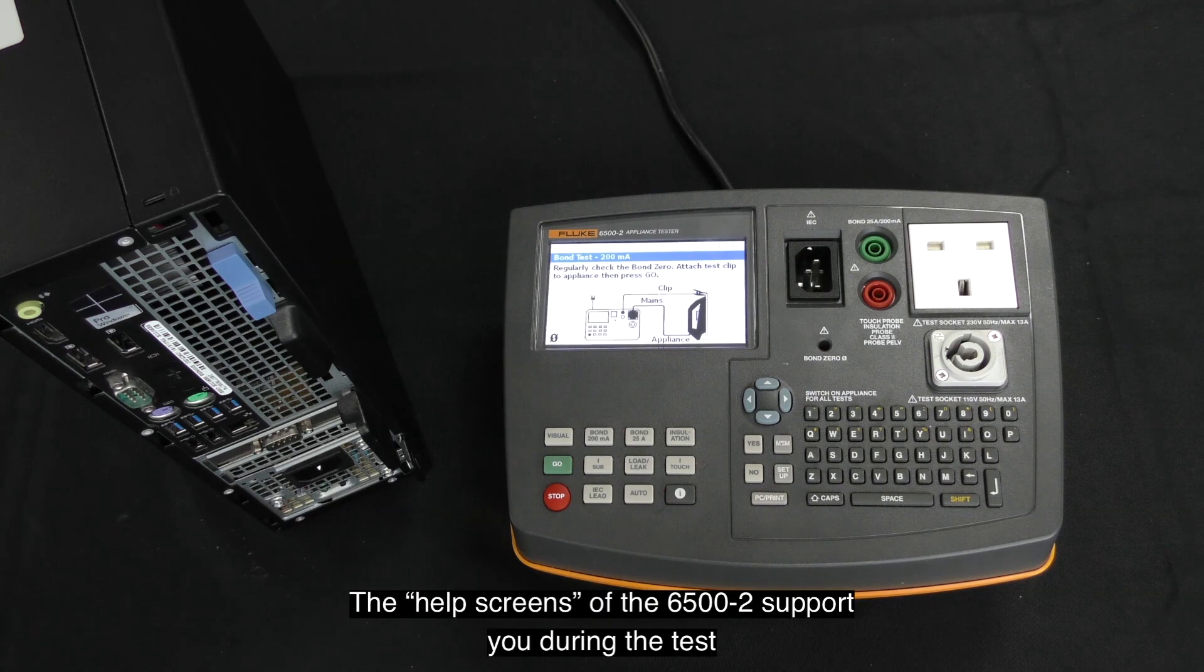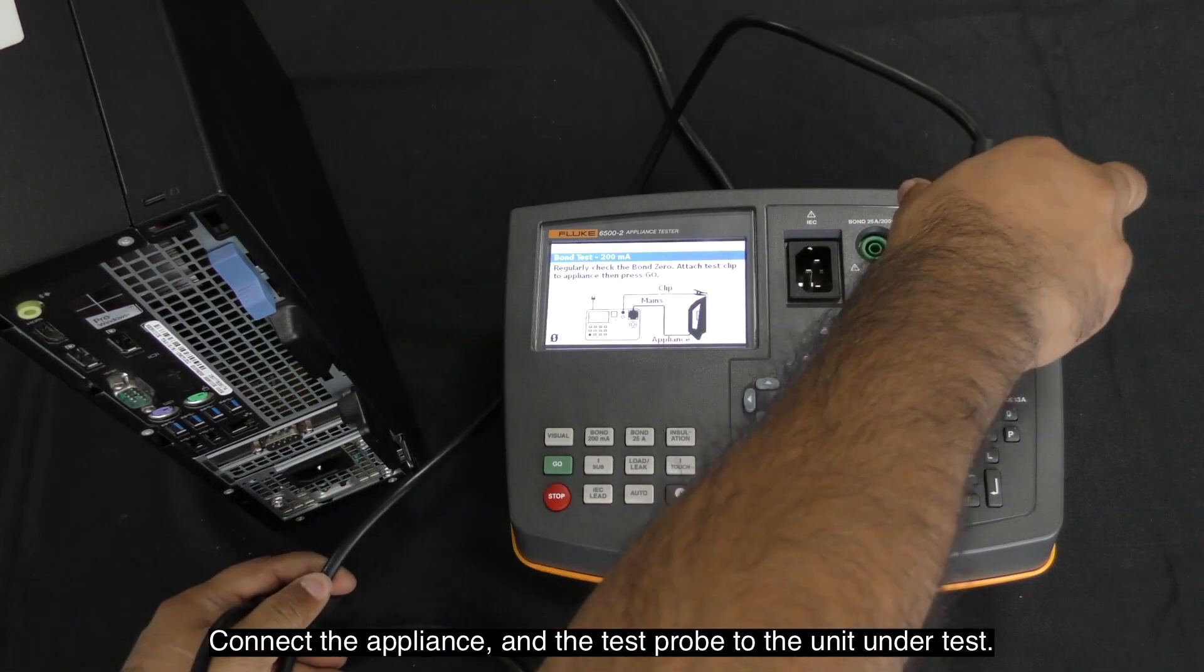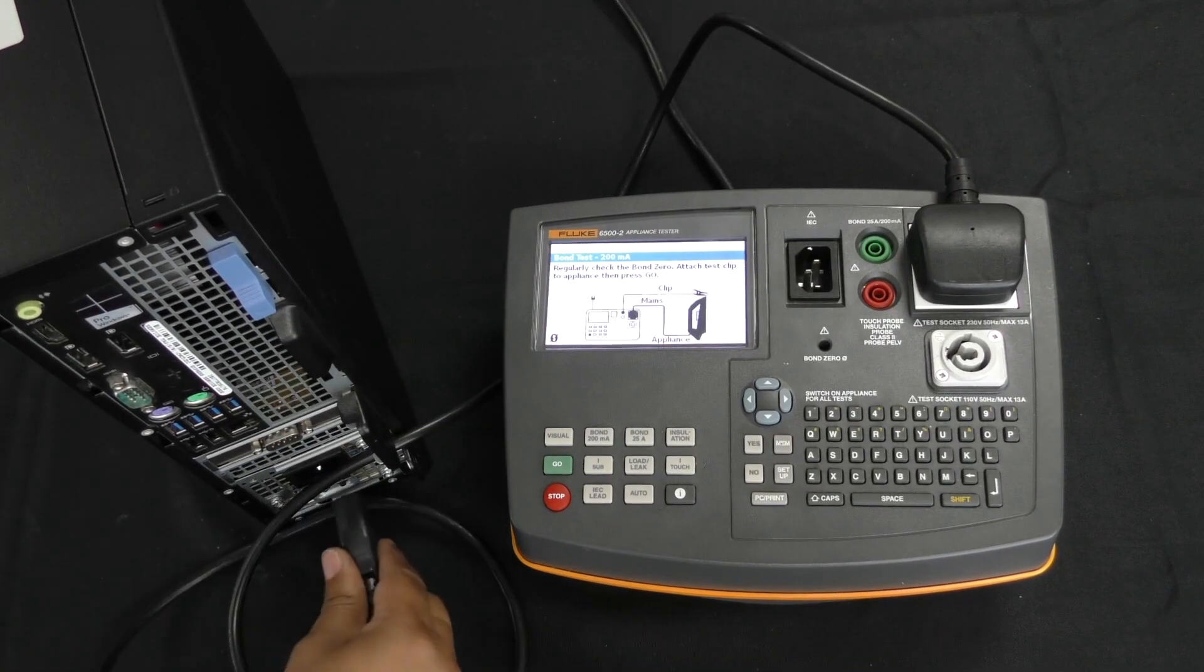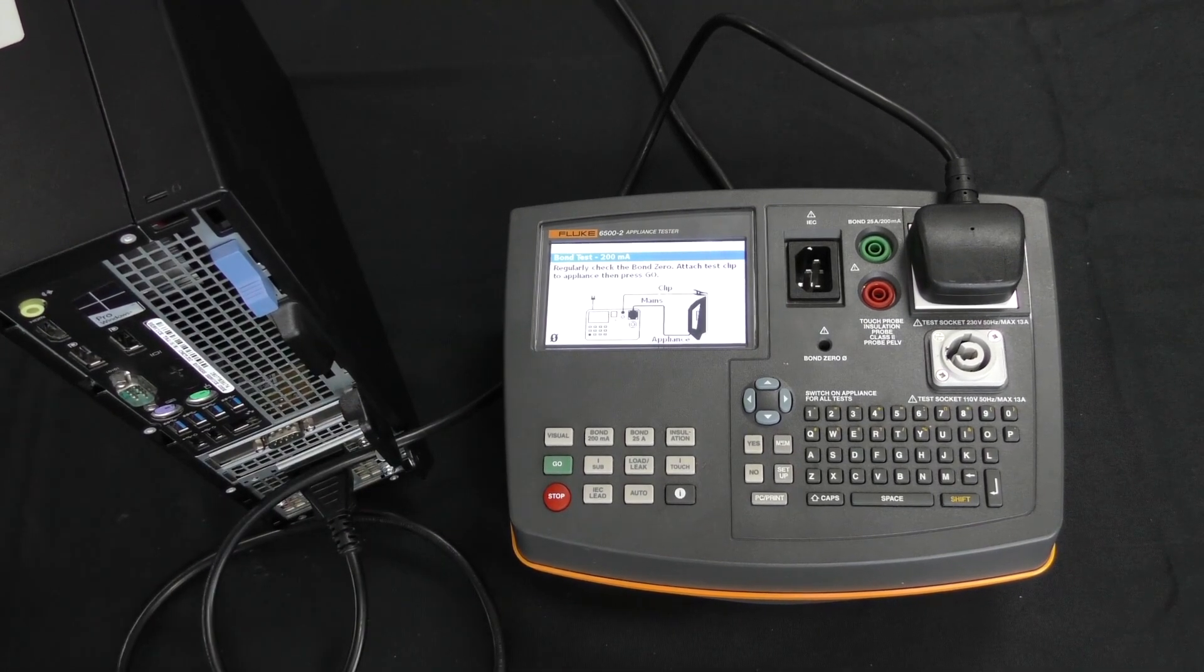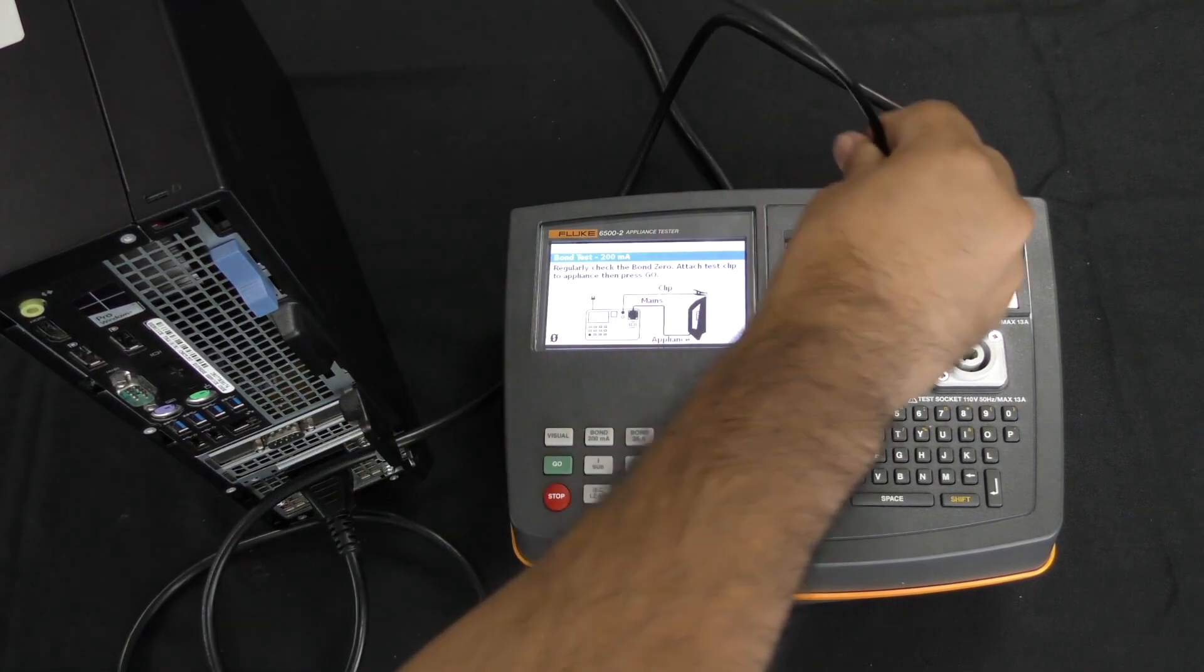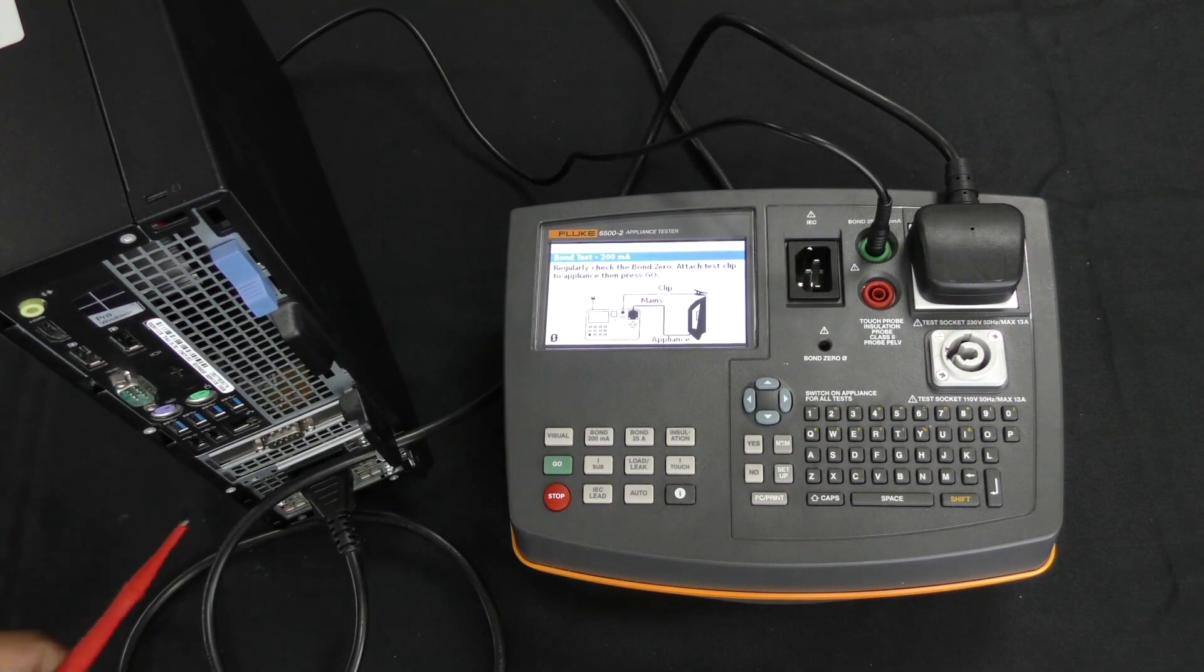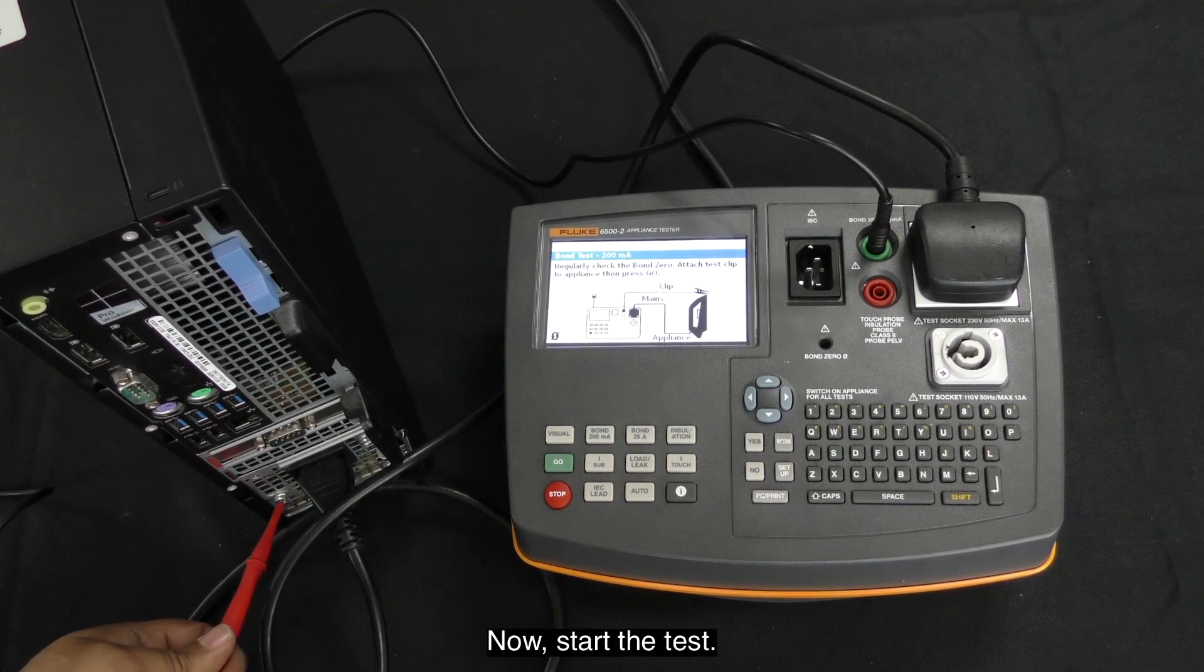The help screens of the 6500 Mark II support you during the test and show you how to connect the unit under test. Connect the appliance and the test probe to the unit under test, then start the test.